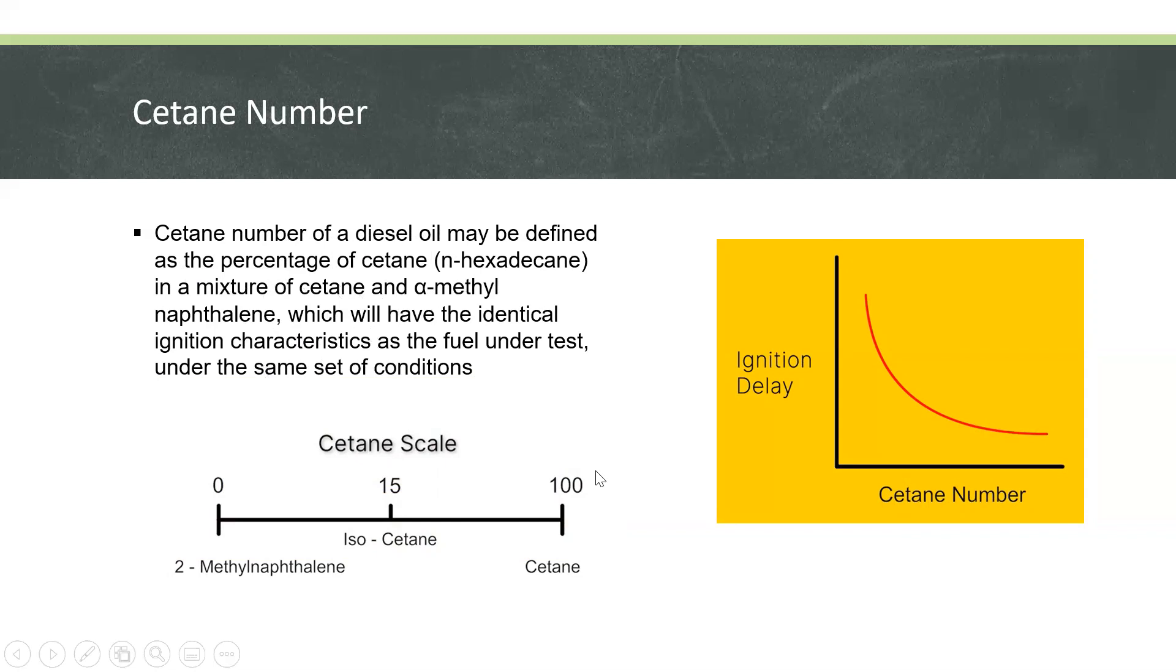It measures the ease with which the diesel fuel will ignite under compression. Higher cetane numbers follow this order: n-alkanes, cycloalkanes, alkenes, branched alkanes, aromatics.